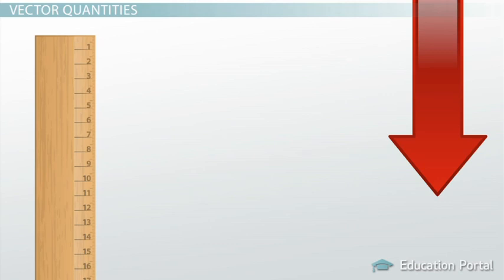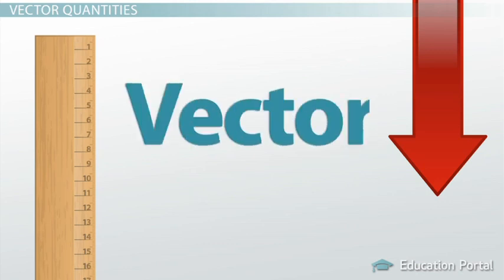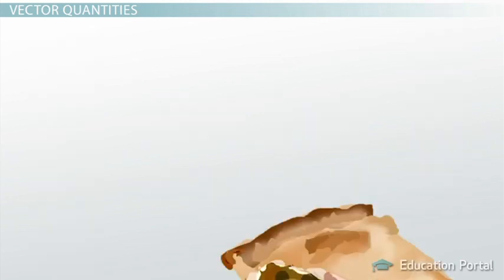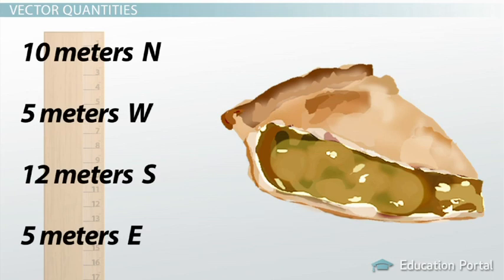Now, let's look at vector quantities. A vector is any quantity that involves a magnitude and a direction. During your second attempt to find the pie, I added directions to the number of meters you needed to walk. 10 meters north, 5 meters west, 12 meters south, and 5 meters east were all vectors.